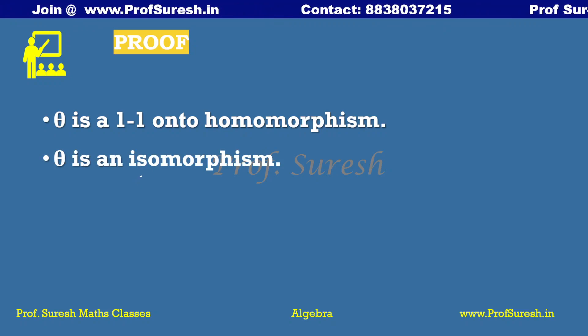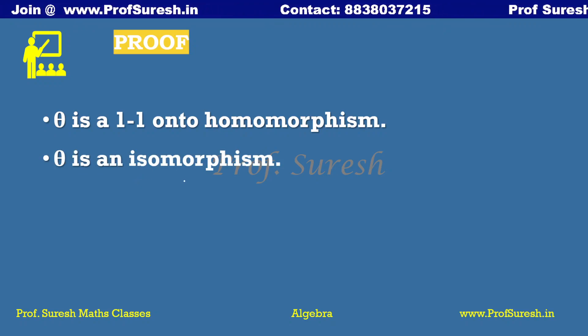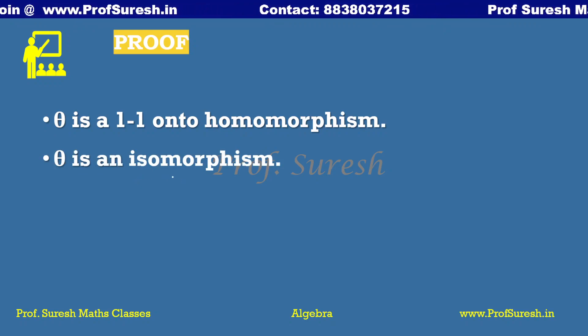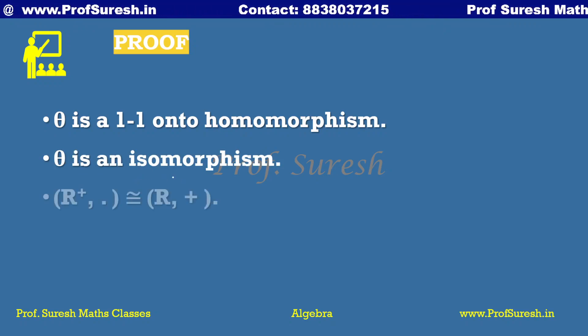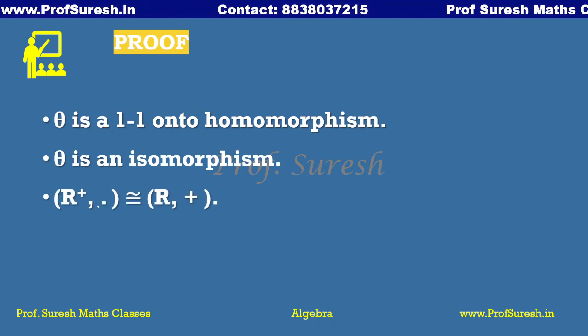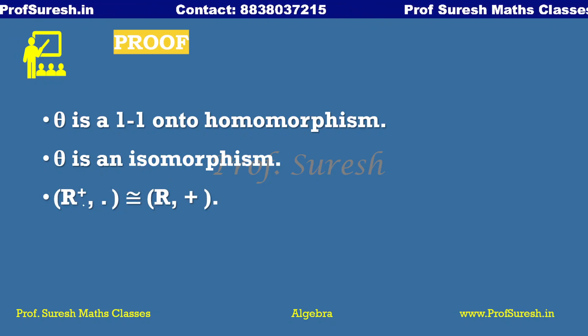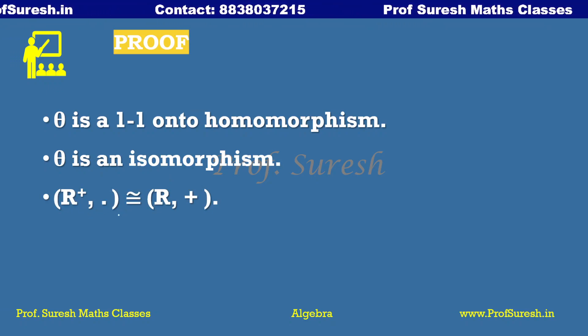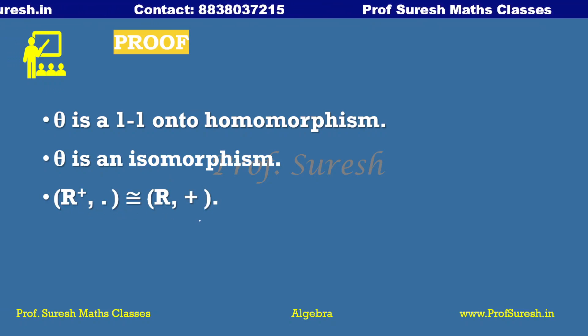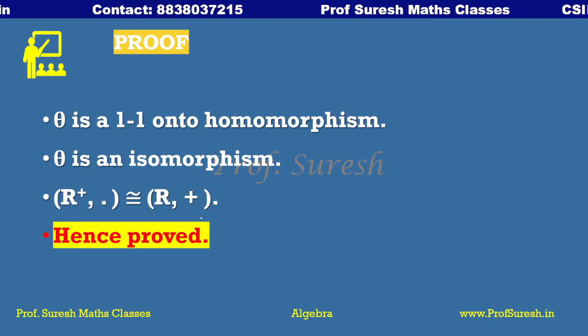Since theta is one-to-one, onto, and a homomorphism, theta is an isomorphism. Therefore, R plus under multiplication is isomorphic to R under addition.